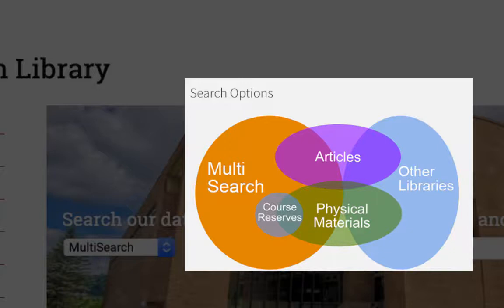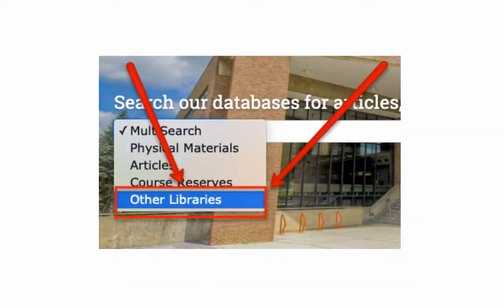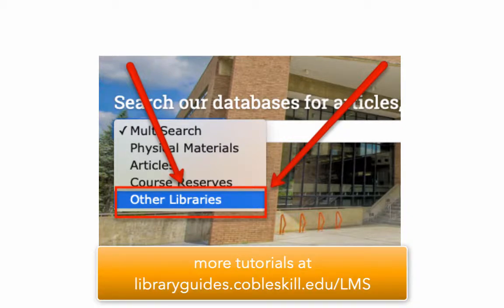Multi-search also includes things we have immediate online access to through subscriptions, including full-text articles, ebooks, and streaming video content. We also added a new Other Libraries option in the drop-down, which will make it much easier to request items through interlibrary loan. A separate tutorial will talk about that in greater detail.